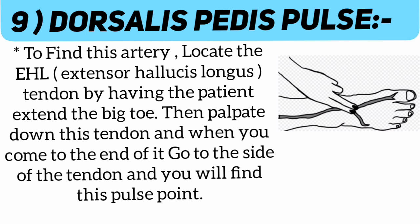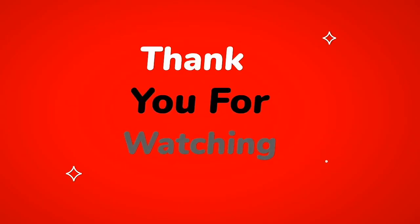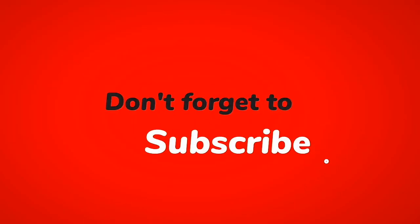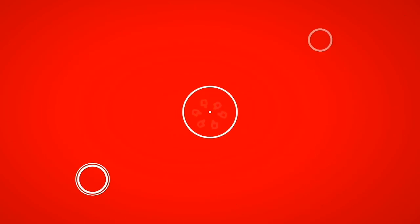Number nine: dorsal pedis pulse. To find this artery, locate the extensor hallucis longus tendon by having the patient extend the big toe, then palpate down this tendon, and when you reach the end of it, go to the side of the tendon and you will find this pulse point.